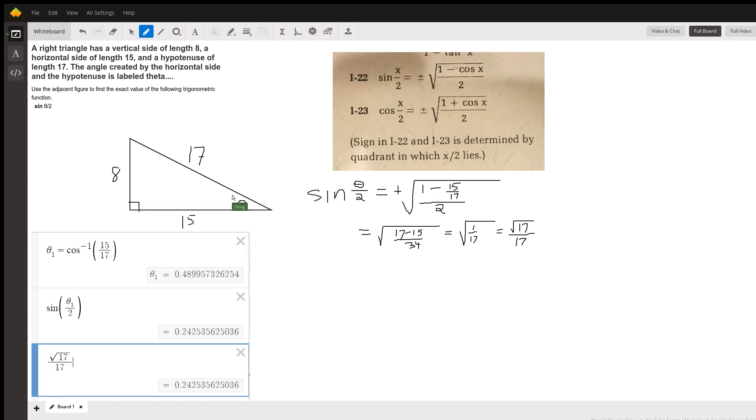And I think I've interpreted this correctly that theta is this angle right here, and we're supposed to evaluate the sine of theta over 2 exactly, the exact value.